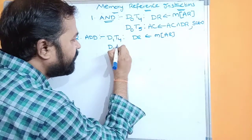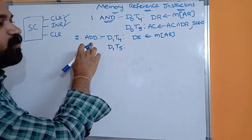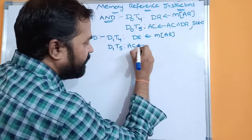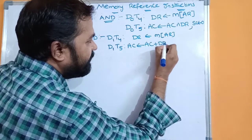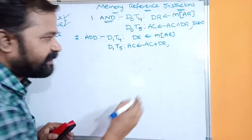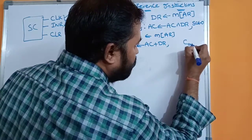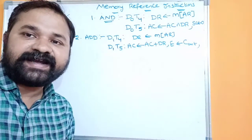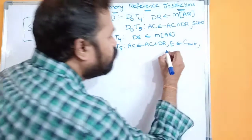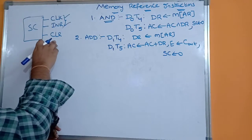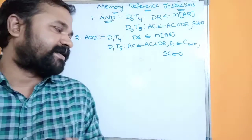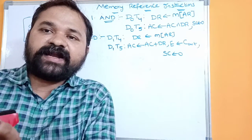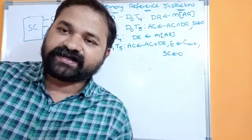During decoder output D1 and timing signal T5, the ADD operation is performed on the data register and accumulator, and the result is transferred to the accumulator. If there is any output carry (C out), that carry is transferred to a flip-flop called E, which stands for extended bit. After that, we clear the sequence counter so the next timing signal starts from T0 again — fetching, decoding, and the process continues.